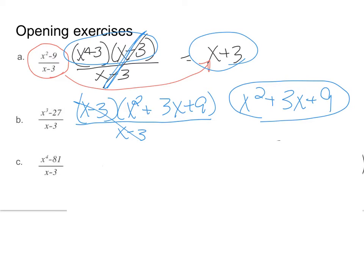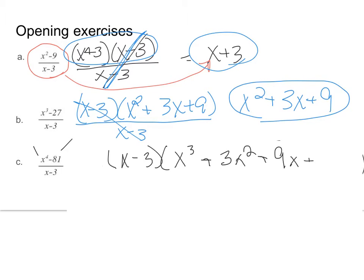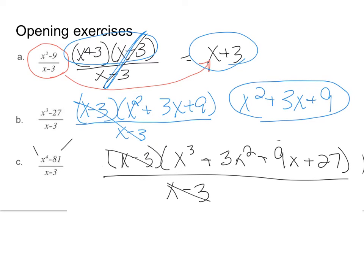On this last one we have another pattern — it's one we learned a few lessons ago and it's important to remember because you can save yourself a lot of time. We do x minus 3 and then use the a and b terms. We go down by powers for the first term and up by powers for the second term — so 3, 9, and then 27, all over x minus 3. Do you see how that's so much faster than long division if you can recognize the patterns?